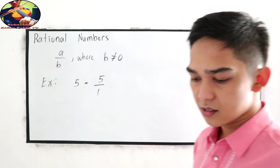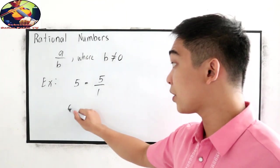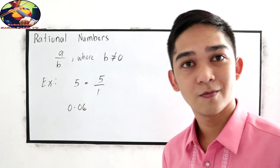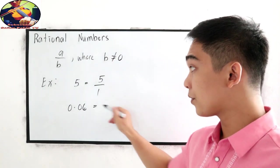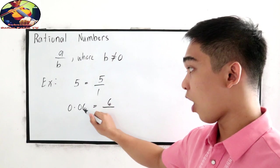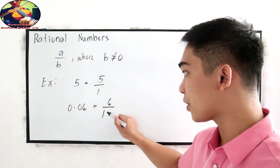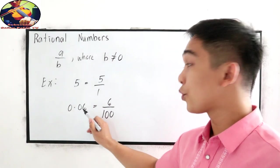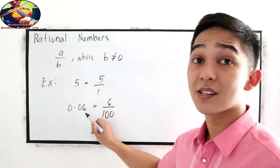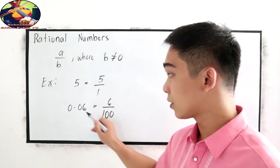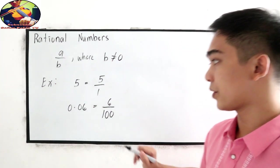Another is 0.06. That is equal to 6 over how many zeros? We have two zeros for the denominator. To write decimal, just count the number of decimal points, and that is equivalent to zeros. 1, 2, so two zeros.